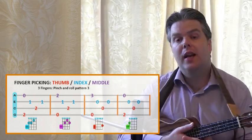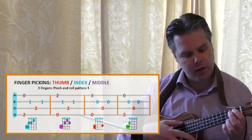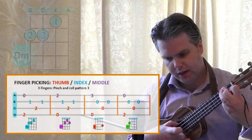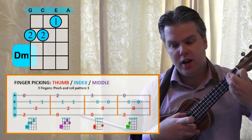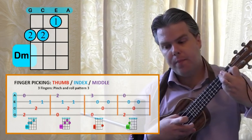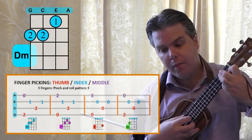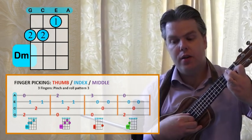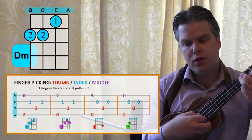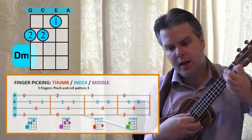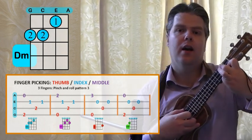We're going to spend another lesson today looking at this pinch and roll technique where we do a pinch on the outer strings, the G and the A string with our thumb and our middle finger there. And then we roll through the E and the C using our index and thumb. So pinch, E, C, E, A and G, E, C, E like that.